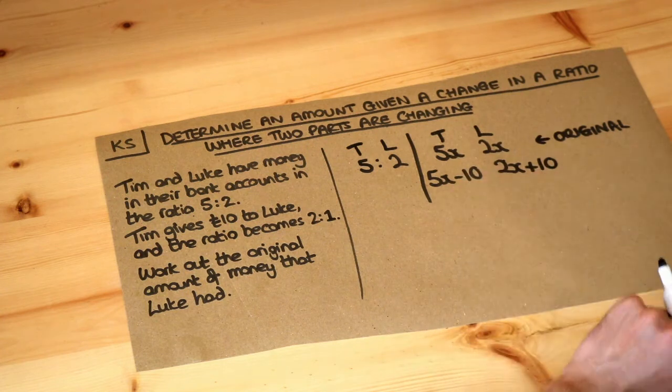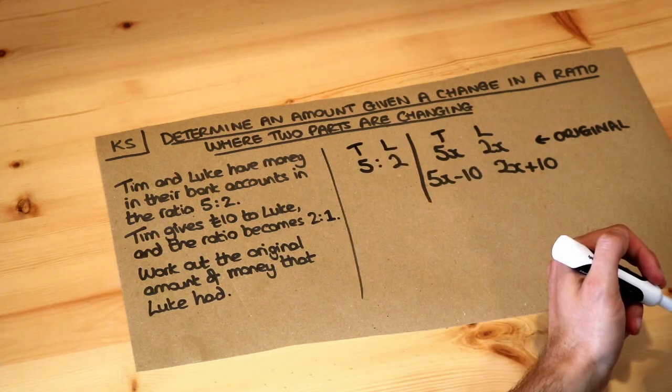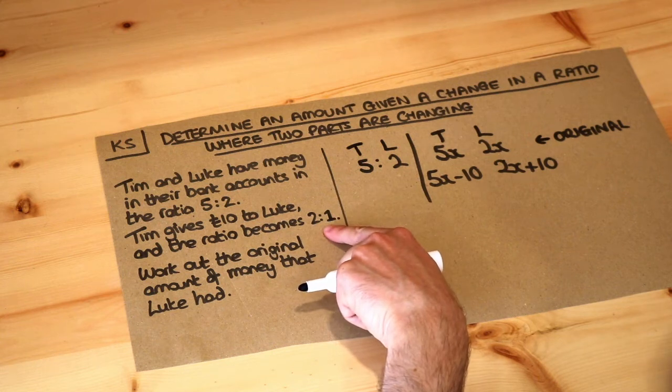So these are the amounts that each person has now in terms of x and we're told that this ratio is 2 to 1.